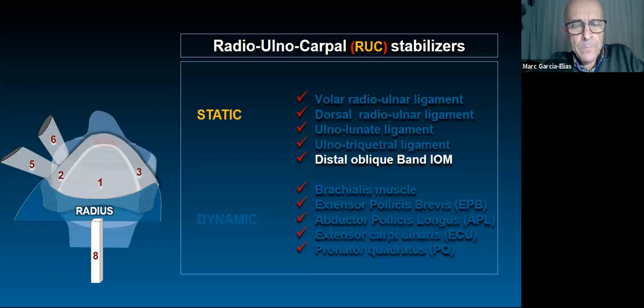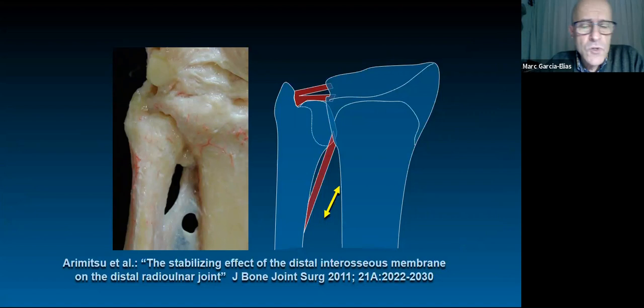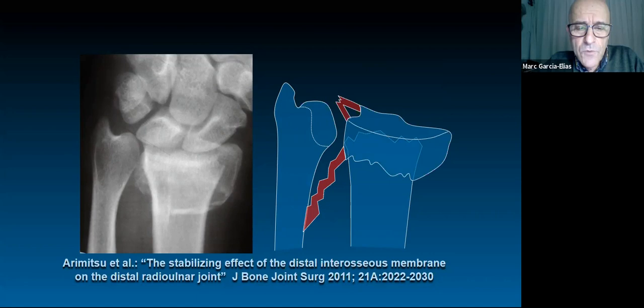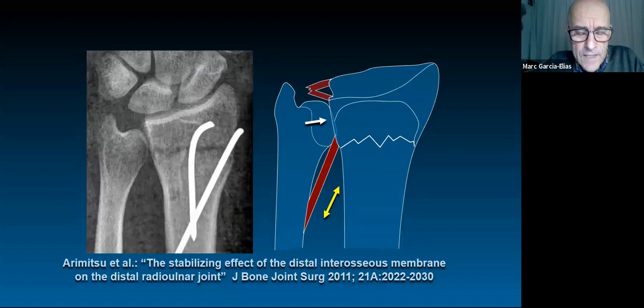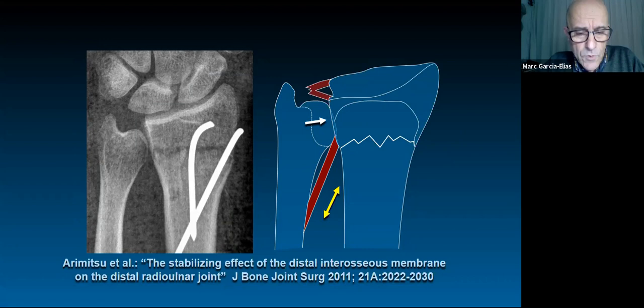The distal fibers of the radioulnar interosseous membrane are also considered secondary static stabilizers. They are important in cases of complete avulsion of the distal radioulnar ligaments associated with a distal fracture of the carpus. In those circumstances the instability cannot be denied, but once the fracture has been anatomically reduced the wrist becomes stable again. The ligament remains avulsed but the joint is stable — the only explanation being these distal fibers of the interosseous membrane.